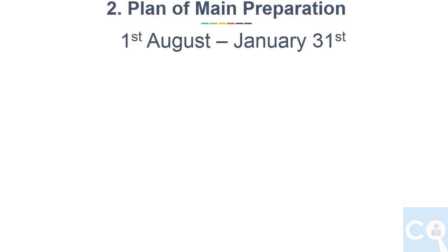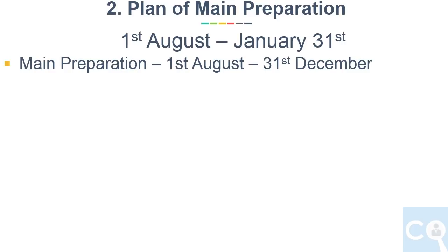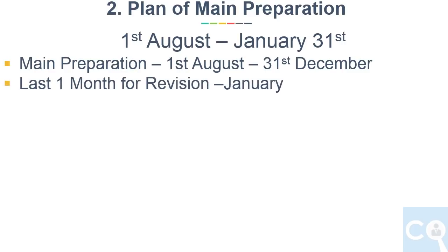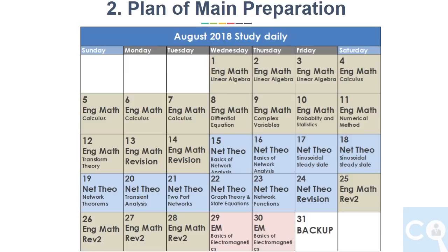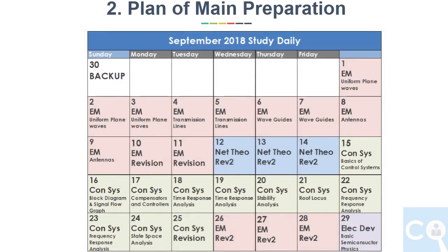Now let's jump to the second point — plan of main preparation. We will start the preparation plan from August 1st to January 31st. The first 5 months are for main preparation, that is till December 31st, and the last month, January, is for revision. One week in the main preparation time is kept as backup for planned vacation — I am keeping one week at the end of December, but you can shift this based on your vacation timing. Based on the distribution of marks and topic weightage, the number of days for each topic and subject are divided in this plan. You can see the plan for each month with the last day as a backup date. You can pause or note these down, or I will upload these images to Google Drive and share the links in the description. There are also two slots for revision — one after completing a subject and another after completing the next subject.